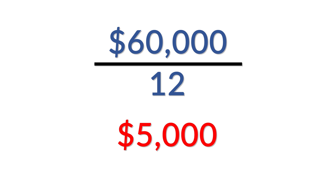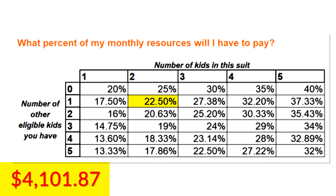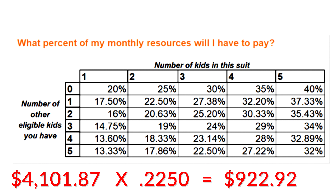From here, we apply the mandatory deductions to our $5,000 gross monthly figure. As you remember from the child support chart viewed earlier in this video, a specific $5,000 round number makes this example very easy. This brings us to a net monthly figure of $4,101.87. Using the percentage guidelines we previously discussed, when a party has two children before the court but one child not before the court with whom they have a duty to support, a 22.5% number is applied when determining our final child support figure. We multiply our net monthly figure of $4,101.87 by 22.5% to arrive at a monthly child support figure of $922.92.